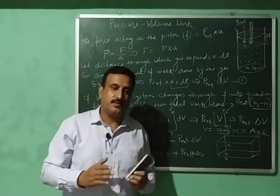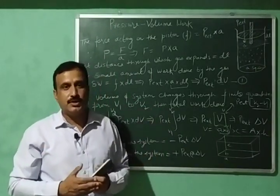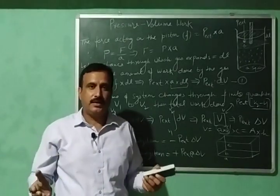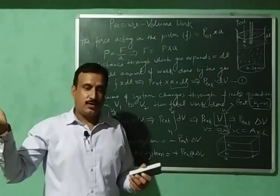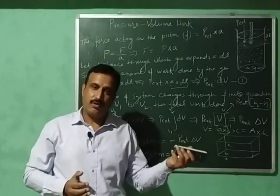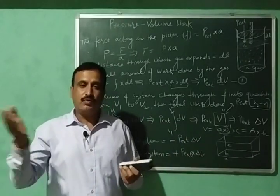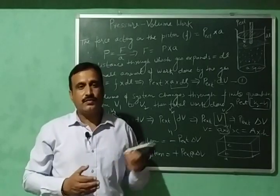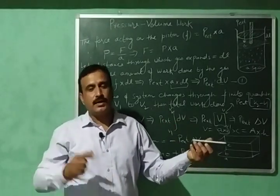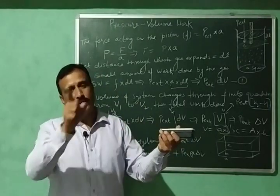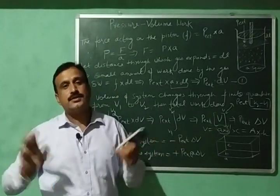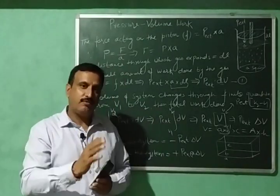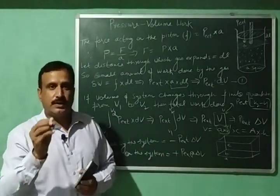The second mode of exchange of energy between system and surroundings is heat. If the system is at higher temperature and surroundings at lower temperature, heat will flow — heat is also a form of energy. If the surroundings are at higher temperature and the system at lower temperature, surroundings give energy in the form of heat to the system. So we have two modes: heat and work.